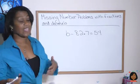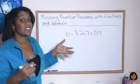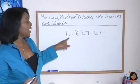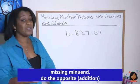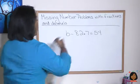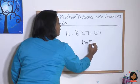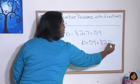Here we have a subtraction problem. And we know with subtraction problems, our job is to look close to see which one is missing. Here we have the minuend that's missing, which means we do the opposite of subtraction. We add. So B is going to equal 54 plus 82.7.